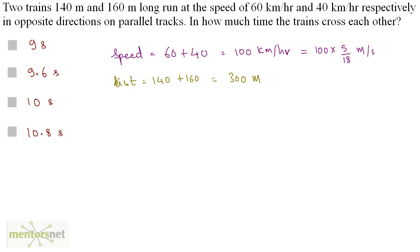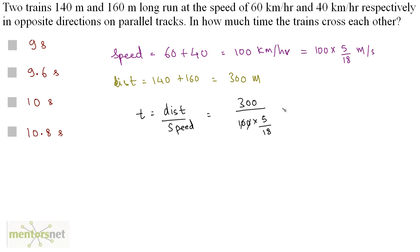We have the speed and the distance, so we can calculate time. Time equals distance upon speed: 300 divided by (100 × 5/18). The zeros cancel, leaving 3 × 18 by 5, which equals 54 by 5, that is 10.8 seconds. So the answer is option D.